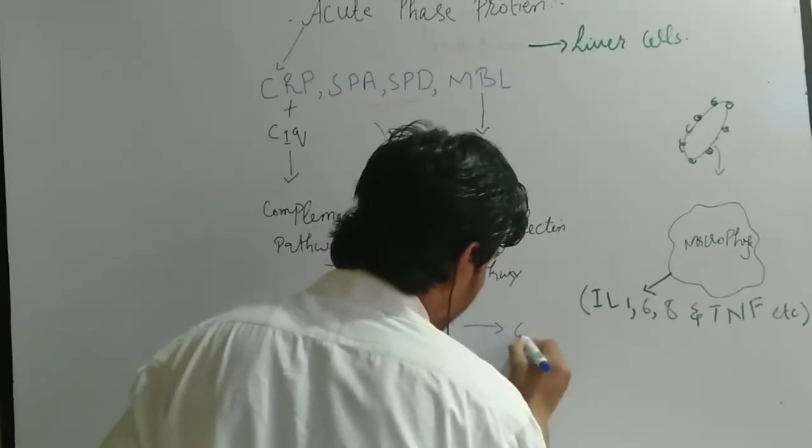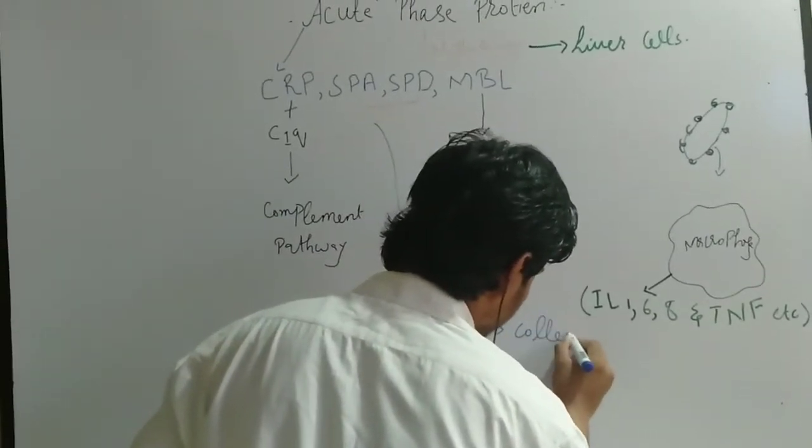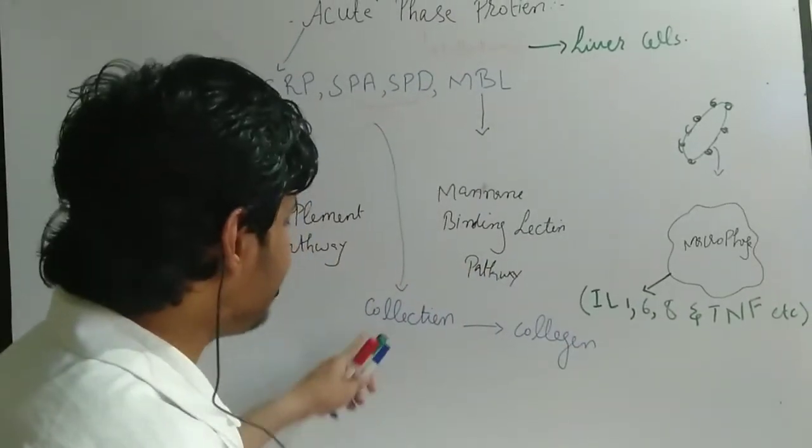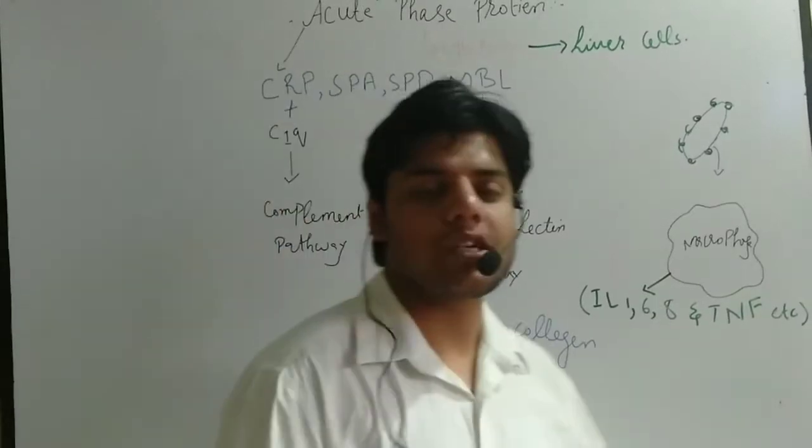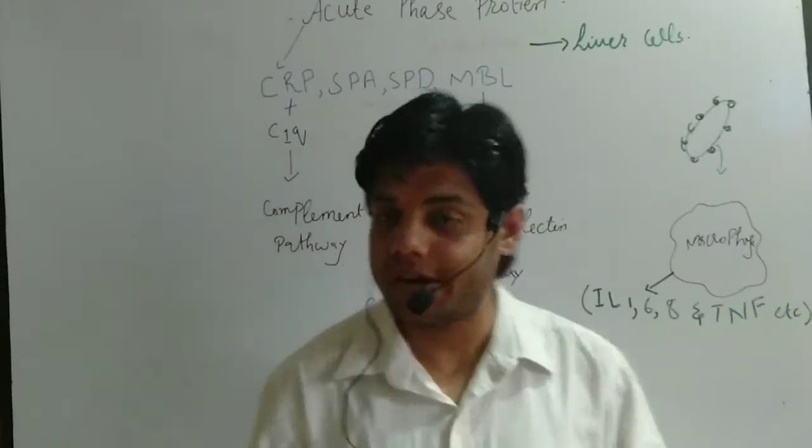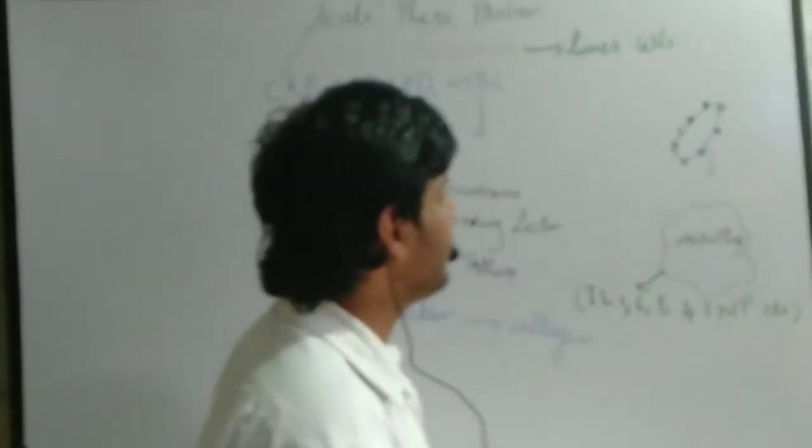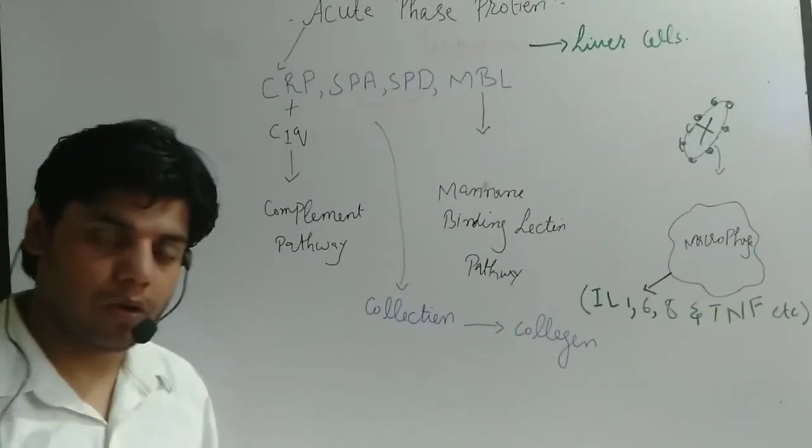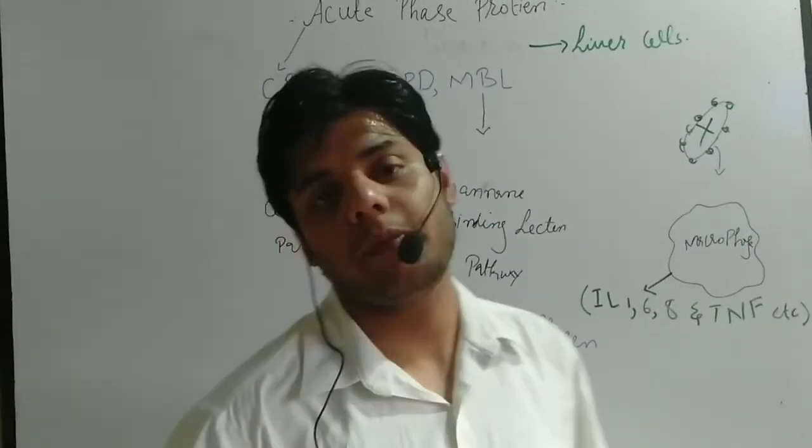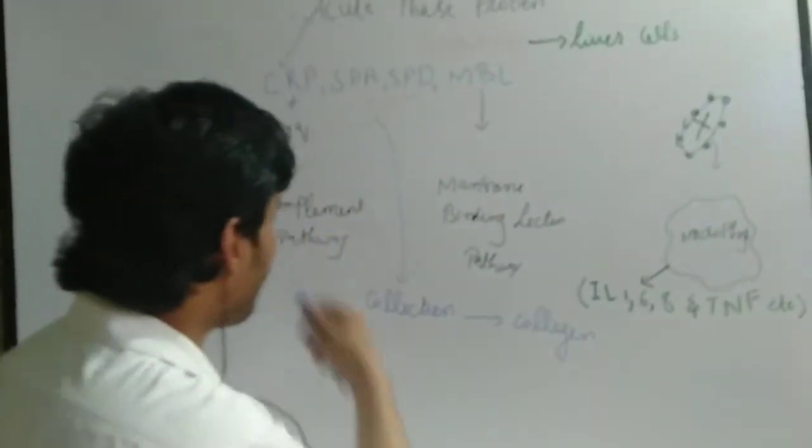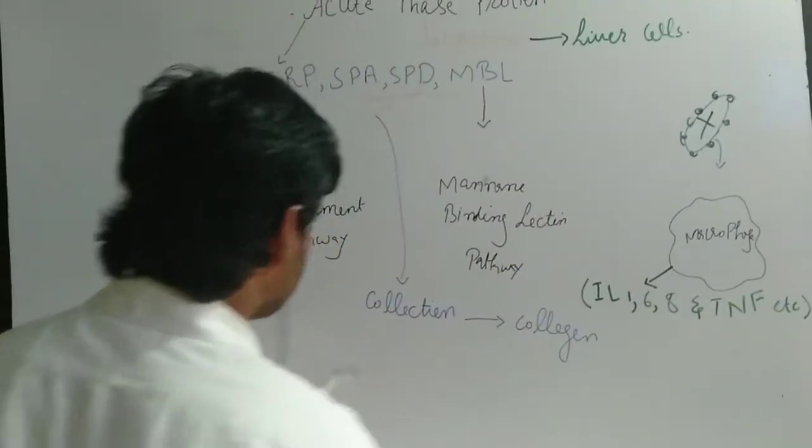This collectin protein is usually secreted from the phagocytes. Once it is secreted from the phagocytes, they will cause the destruction of this bacterial cell. After some time the process will be under control. How do they kill the bacteria?